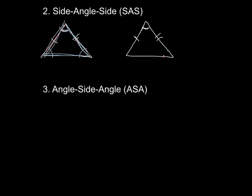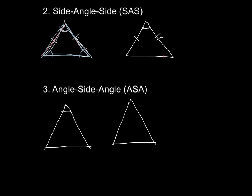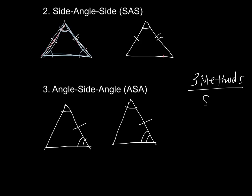Then we have angle-side-angle, or ASA. That would be where an angle is congruent, the side between them is congruent, and the other angle is congruent. The congruent side has to be between the two congruent angles. So we have our three methods: SSS, SAS, and ASA. Just make sure you don't spell a bad word with side-angle-sides — that's not one of our methods.